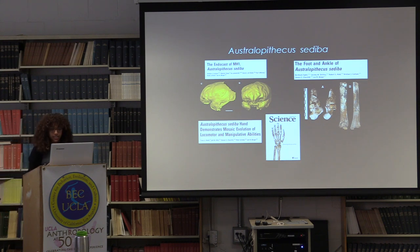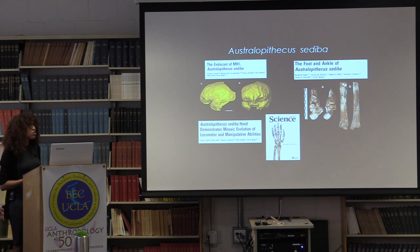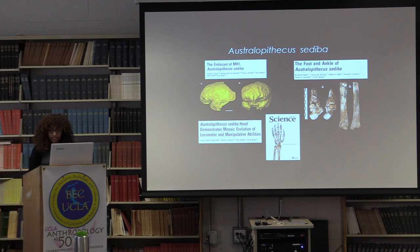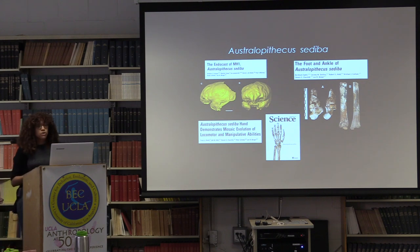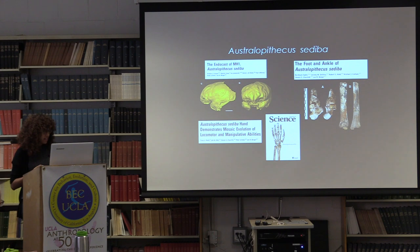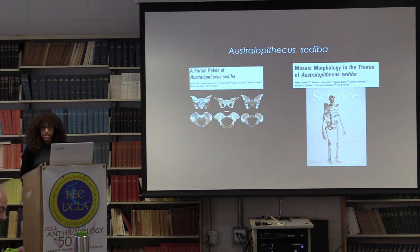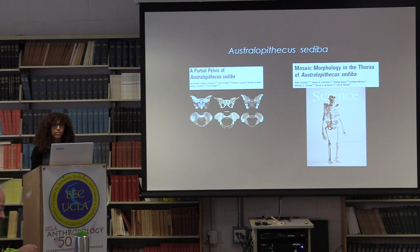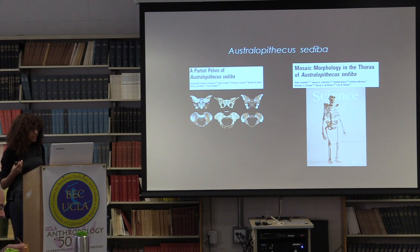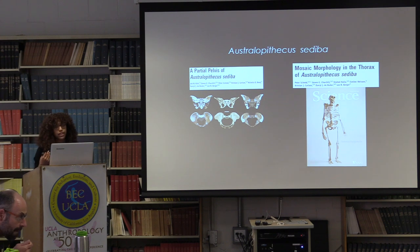The two articles describing the hand and foot of sediba point to a mixture of Homo and Australopithecus-like traits. A significant finding is that sediba had a surprisingly modern hand whose precision grip led some authors to suggest it may have been a tool-maker. Similarly, the pelvis and lower limb showed a number of mixed traits — notably derived traits shared with later Homo for more efficient bipedal locomotion. However, the upper limb, thorax, and vertebral column display traits relating to more efficient arboreal climbing.